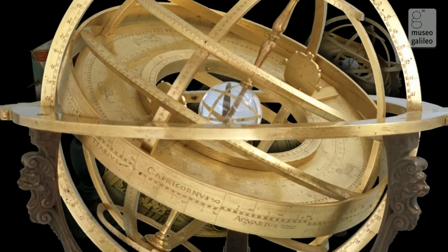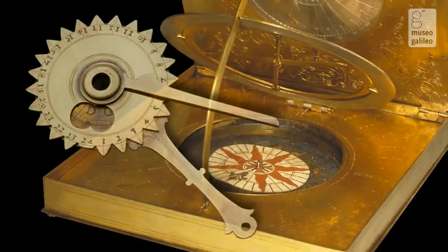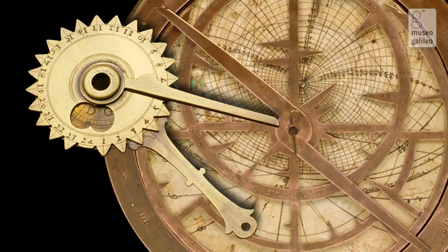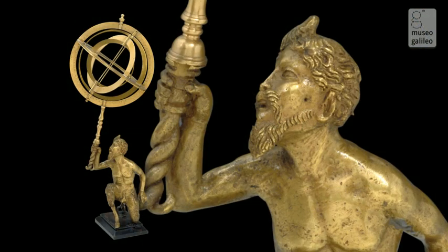Especially important in this room are the instruments from the legacy of Viviani, Galileo's last disciple. This collection includes objects of many kinds, revealing Viviani's specific interests in the field of astronomy.